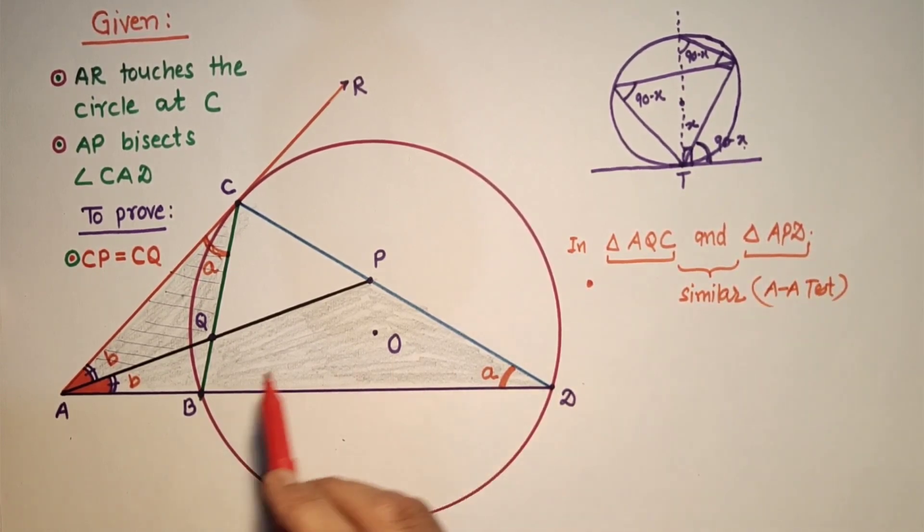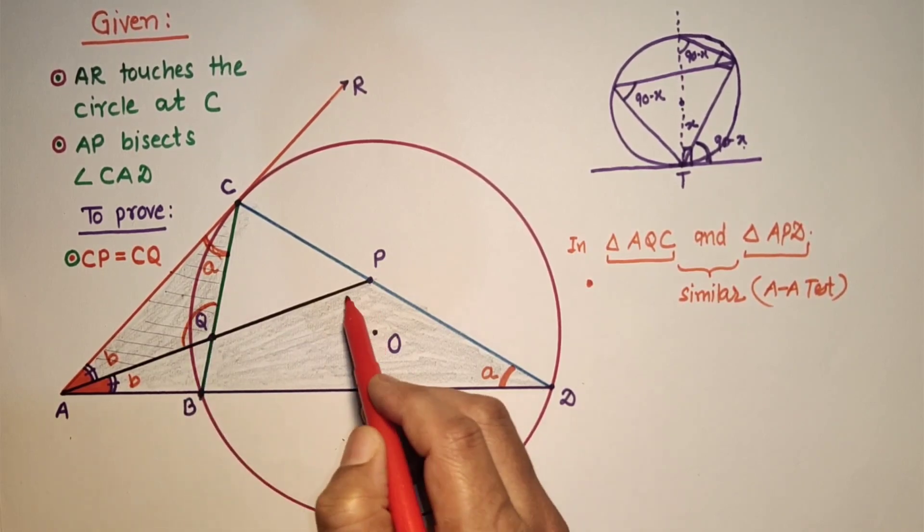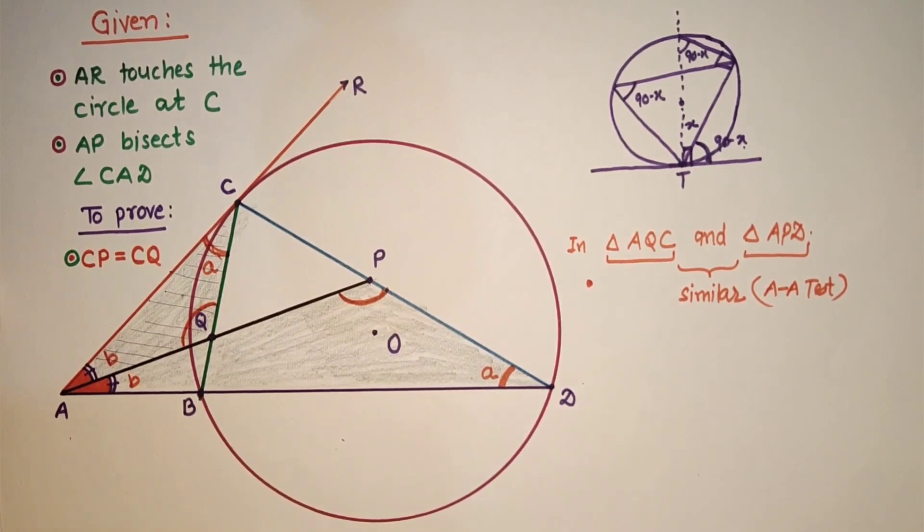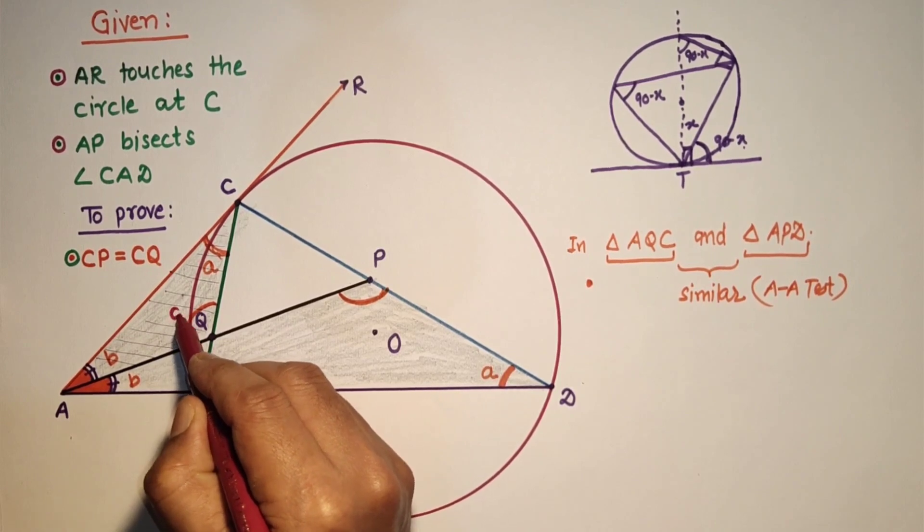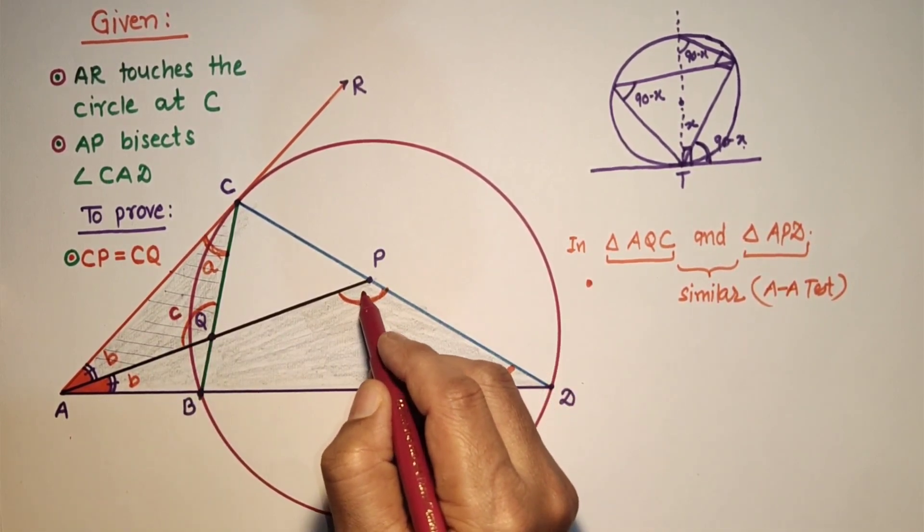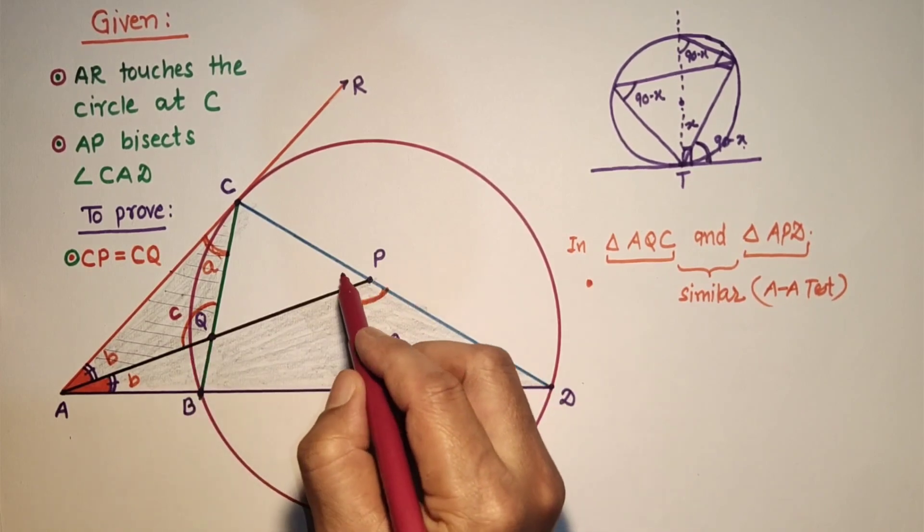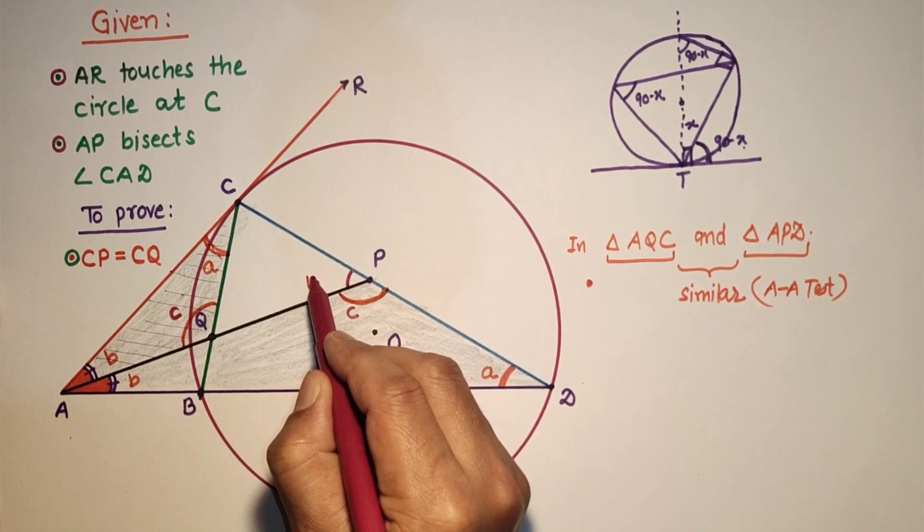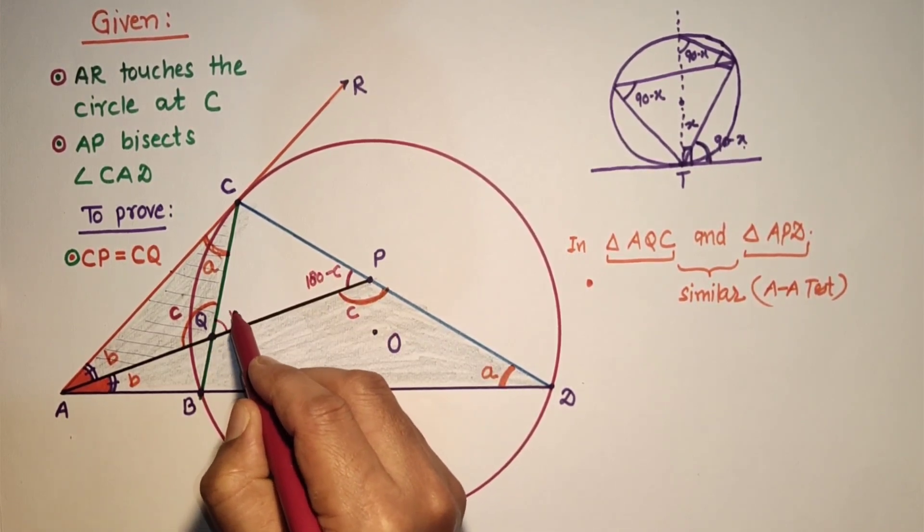And if these two triangles are similar, then the third angle will be equal to the third angle. So if it is C, then it will also be C. And if these two angles are C, then its linear pair will be 180 minus C, and this is also 180 minus C.